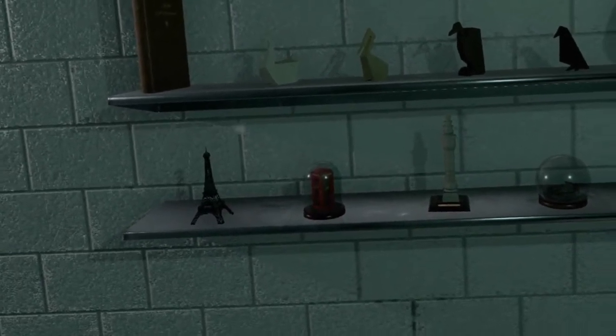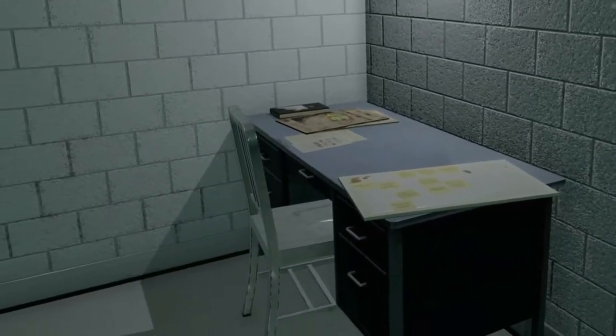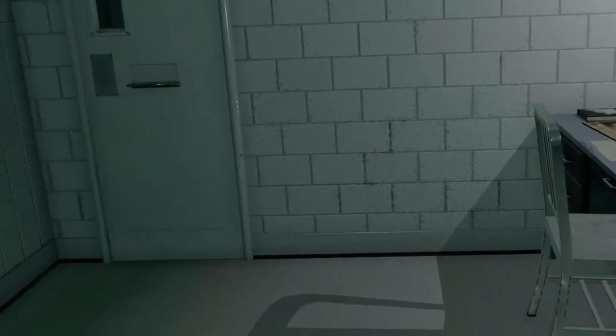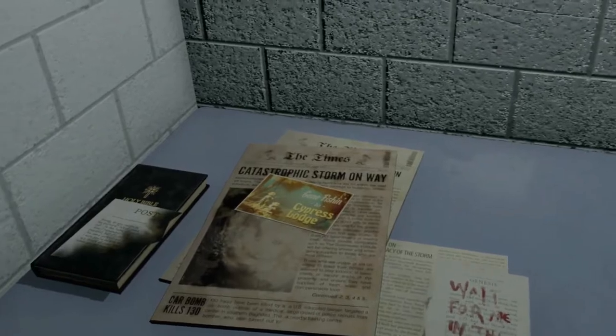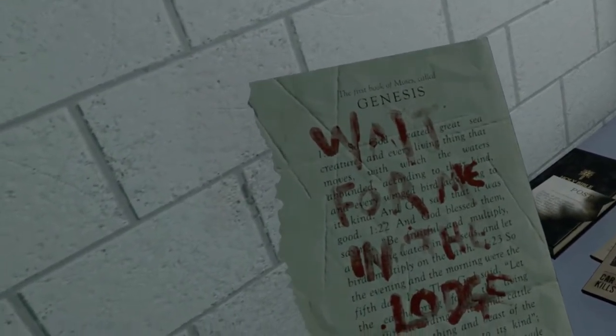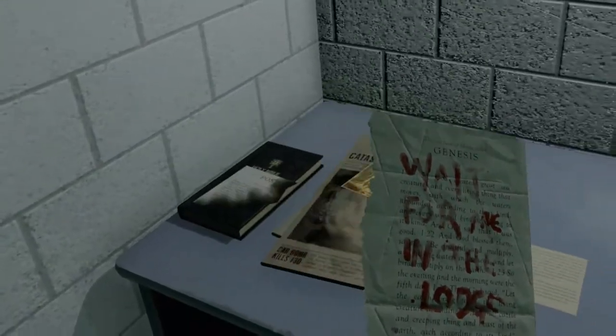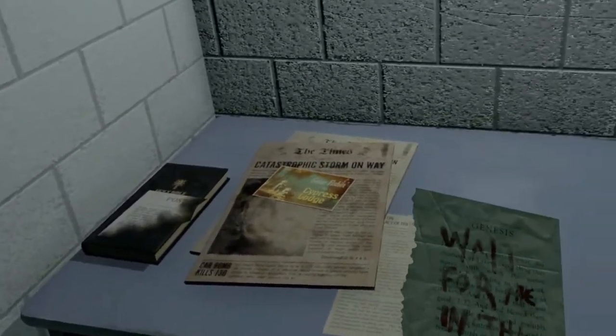The only major clue that I found outside of the other half of the magazine story was this Bible page here with blood on it, letters, and it says, wait for me in the lodge. So what does that mean? I don't know, but I'm sure we're going to find out soon.